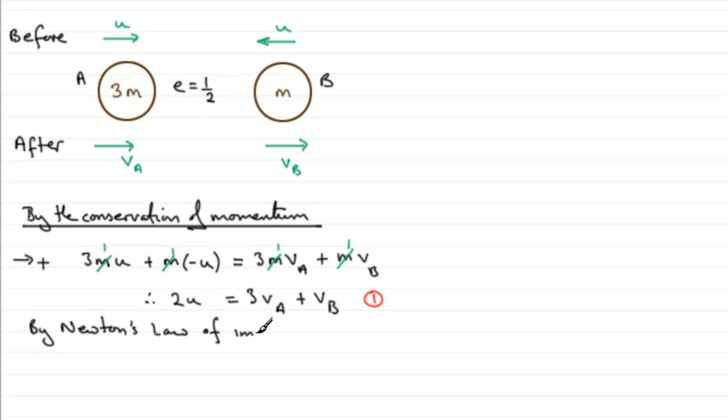We should know this law. It is the coefficient of restitution e equals the relative separation speed divided by the relative speed of approach. So the relative separation speed, knowing that VB must be greater than VA, will be VB minus VA, and we divide this by the relative speed of approach, which will be u plus u.